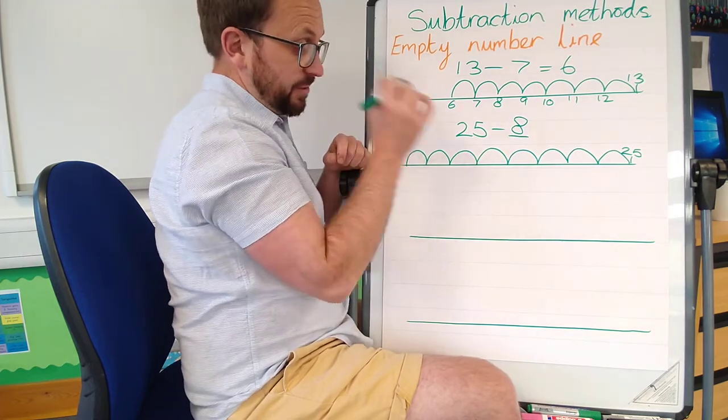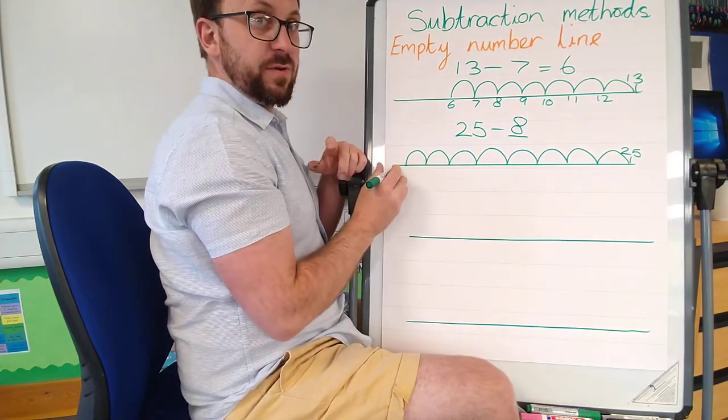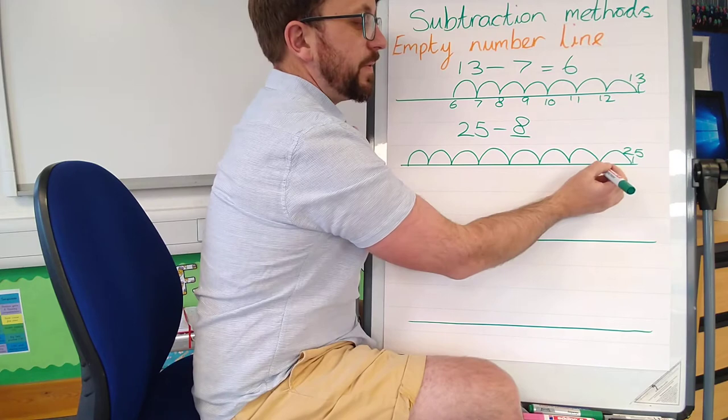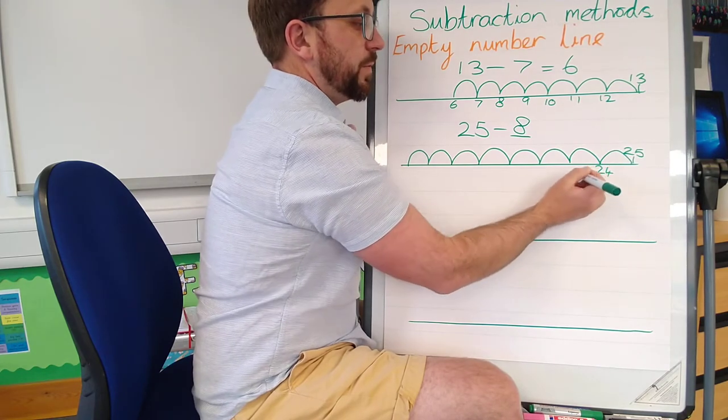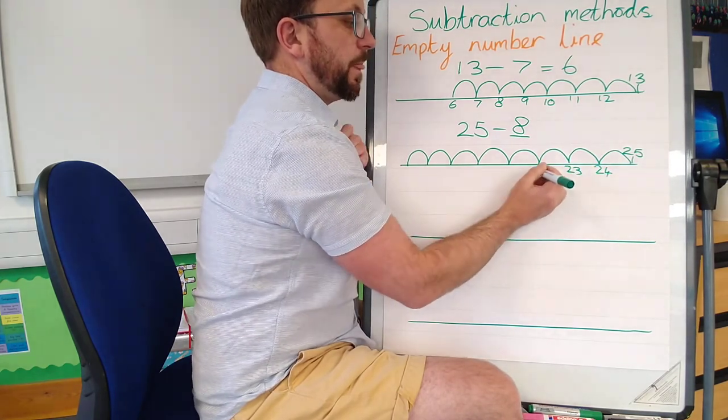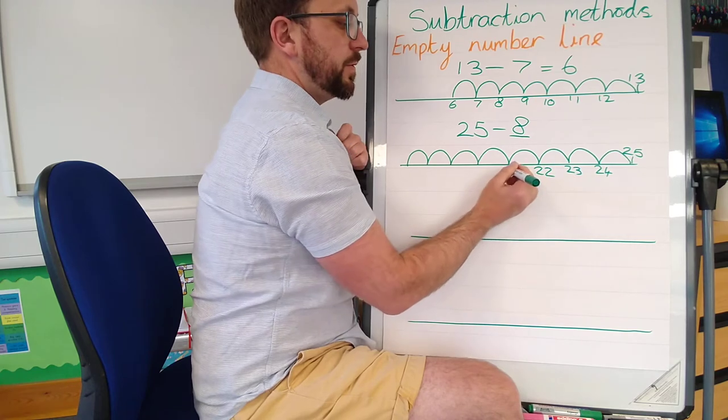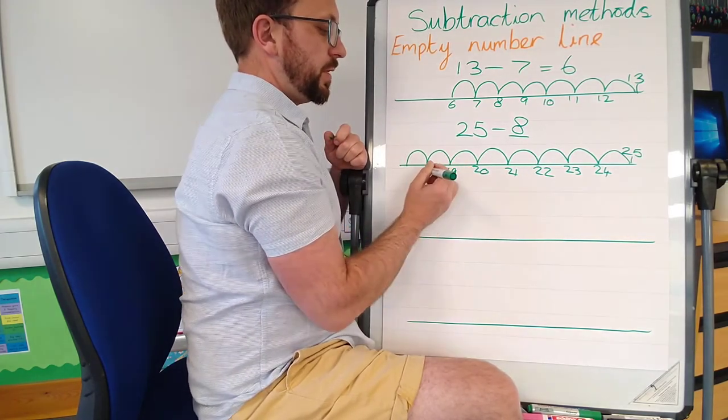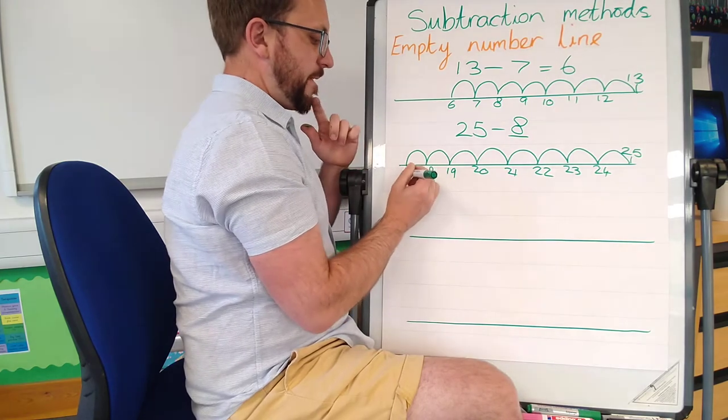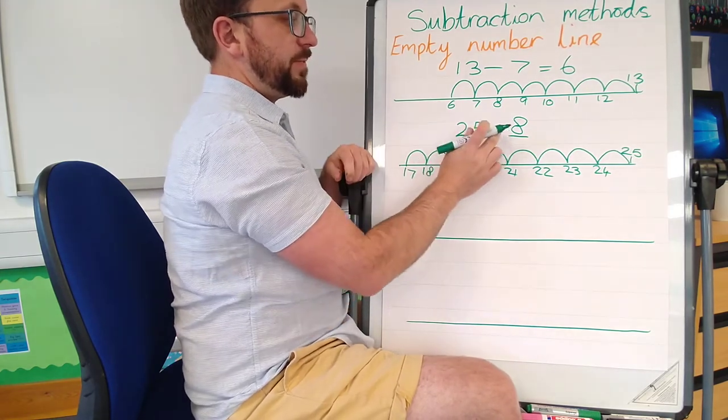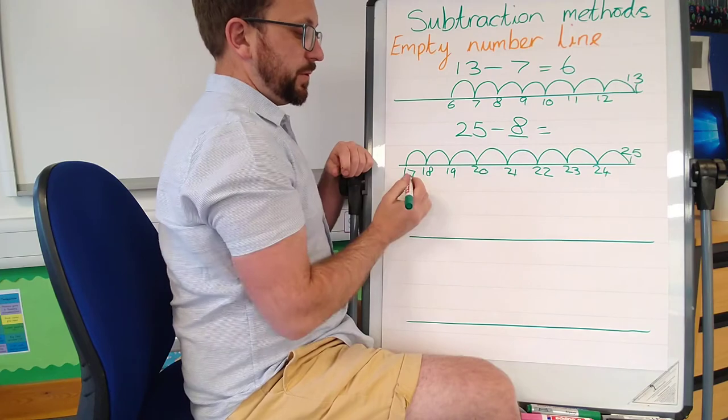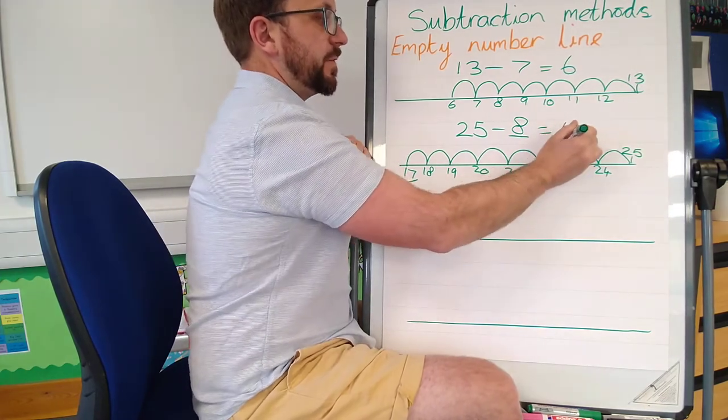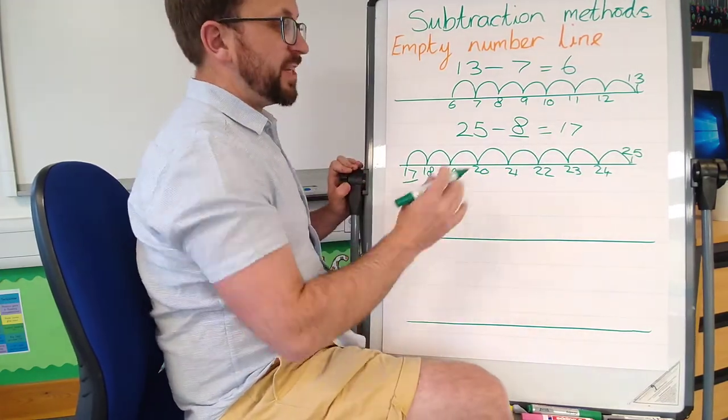Now just because I've got to the end doesn't mean the answer is zero, okay? So 25, 24, 23, 22, 21, 20, 19, 18, 17. 25 take away 8 equals 17. Yeah, we've got there. Let's try a bigger one this time.